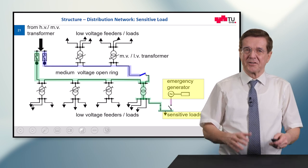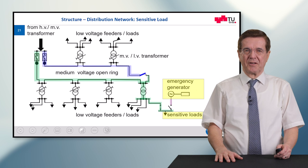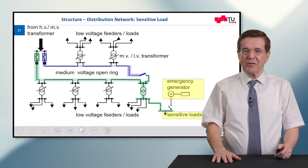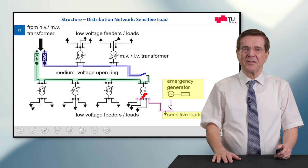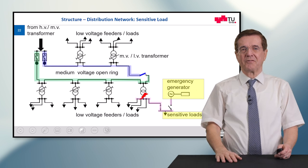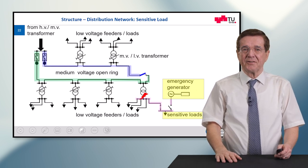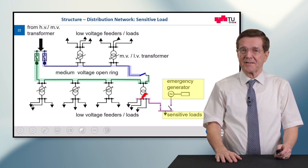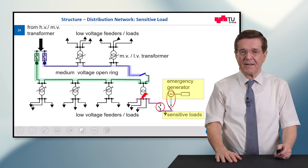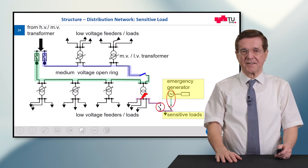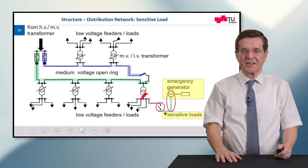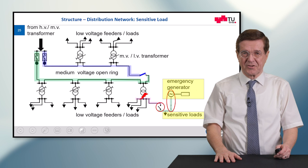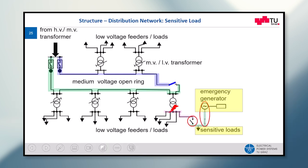In addition to this quite safe supply, you may have very sensitive loads — for example, a hospital. When a fault happens, a ring structure does not help because you cannot get energy to the lower voltage level, to the low voltage side. The sensitive loads are no longer supplied. At that very moment, an emergency generator is started up: the normal supply to the sensitive loads is interrupted and the emergency generator re-energizes them. So in a hospital, for example, the sensitive loads are supplied with only a very short interruption, while the rest unfortunately has to wait until repair work has been done.